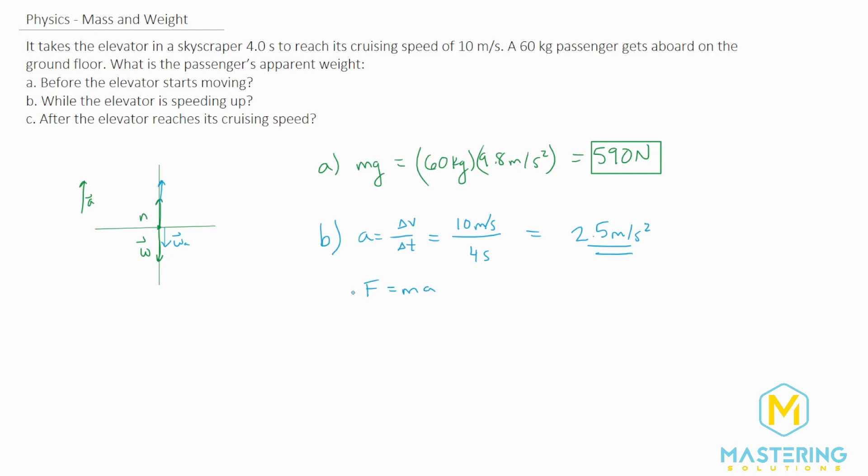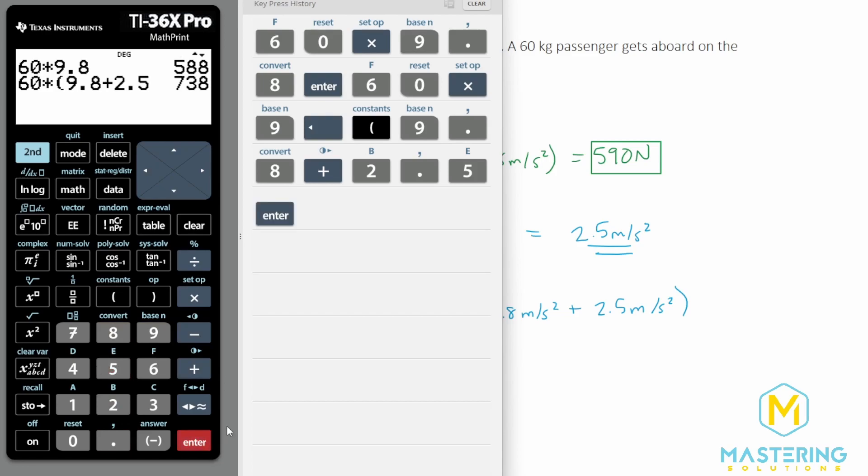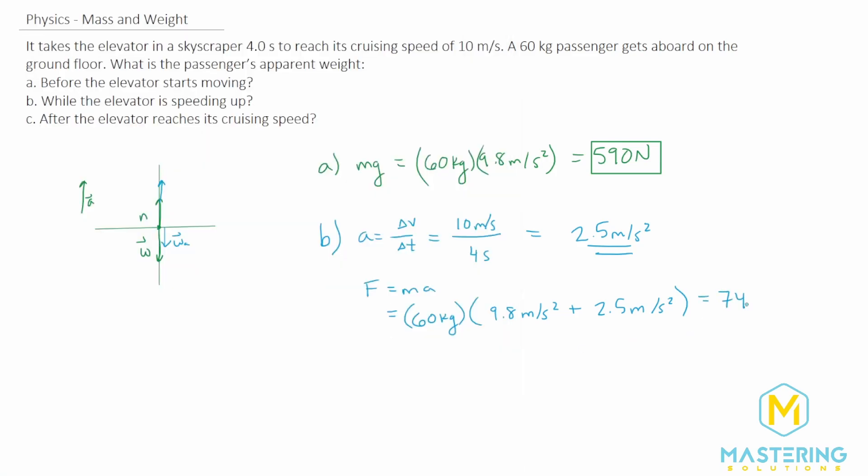We're trying to find what the force is because that force is the apparent weight. The mass isn't changing, so it's the acceleration that is changing. We have 60 kilograms, and now the acceleration is the normal 9.8 meters per second squared, plus this extra acceleration of 2.5 meters per second squared from the elevator. So we have 60 times 9.8 plus 2.5, which gives us 738 or 740 newtons as the apparent weight. That's the one way you can do it.